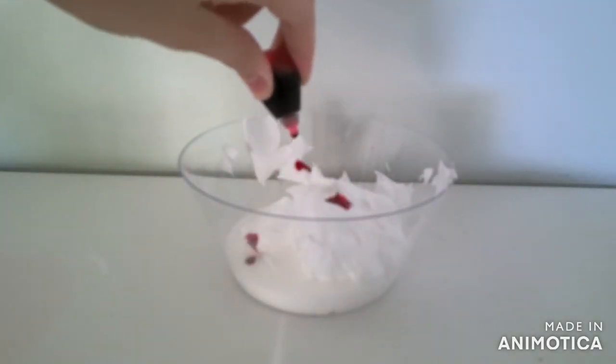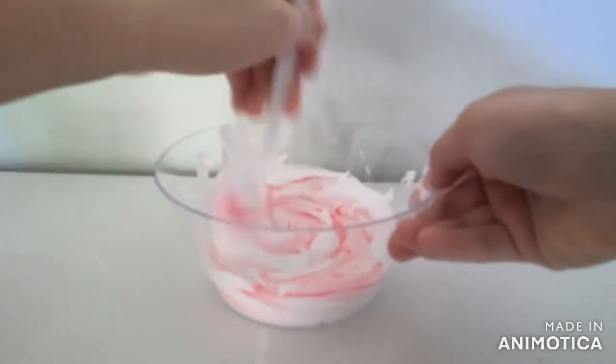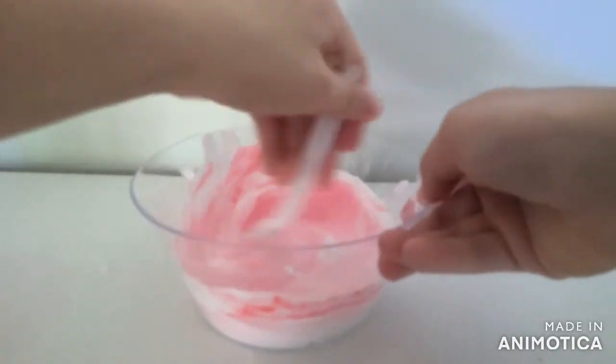Now you can add food coloring if you want - this is optional. Stir all three of those ingredients together until you get one mixture.